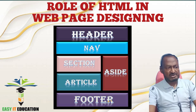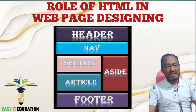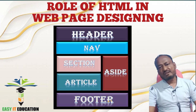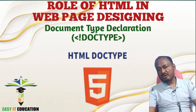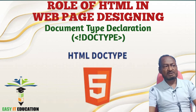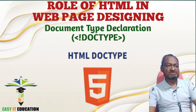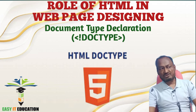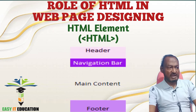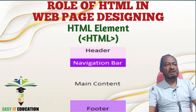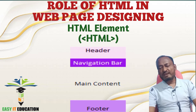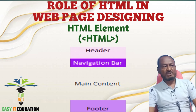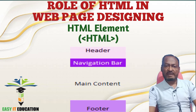Here is a detailed explanation of HTML elements and their uses. Number 1: Document Type Declaration (DocType). It is the first line of an HTML document and specifies the HTML version being used. Number 2: HTML Element. The HTML element is the root element of an HTML document and contains all other elements.